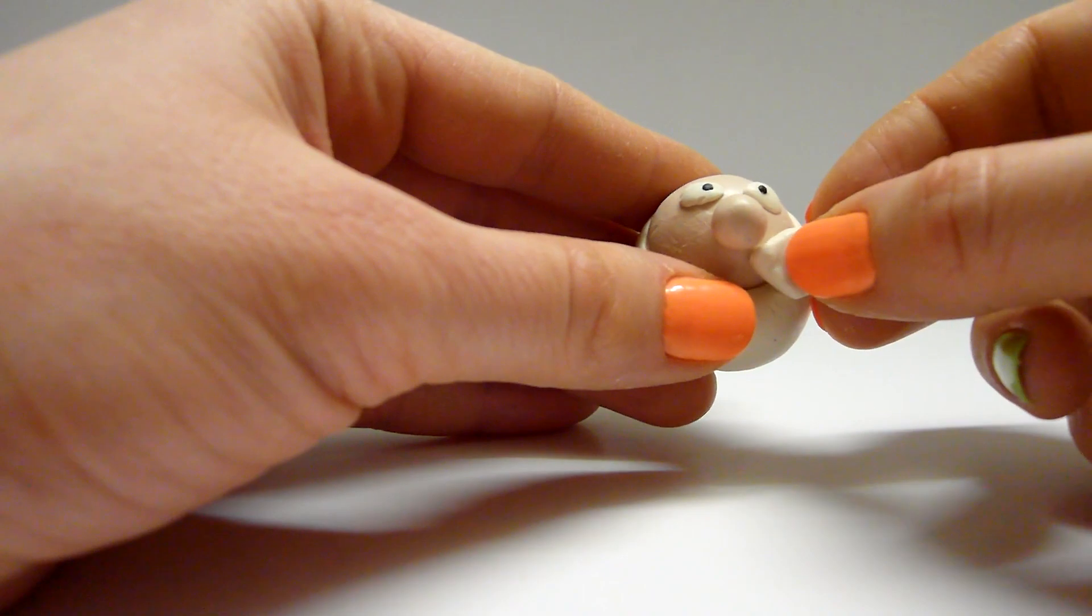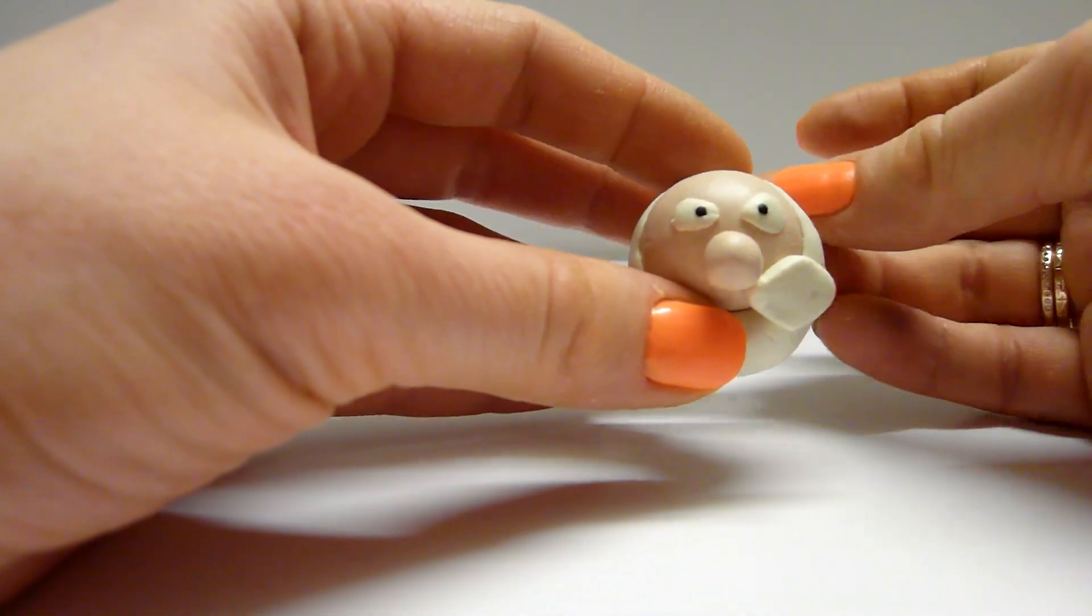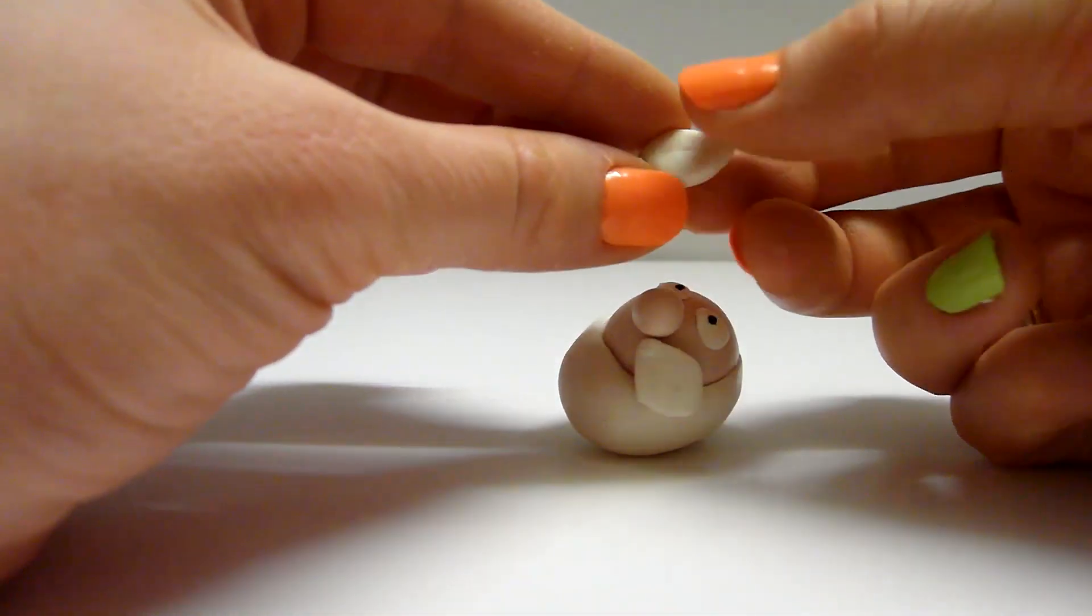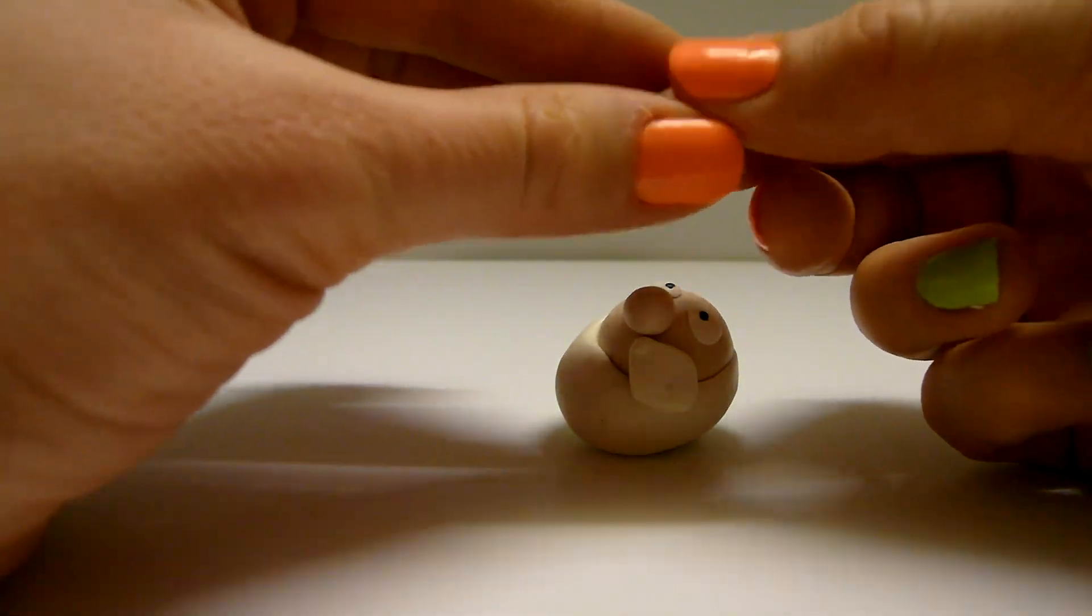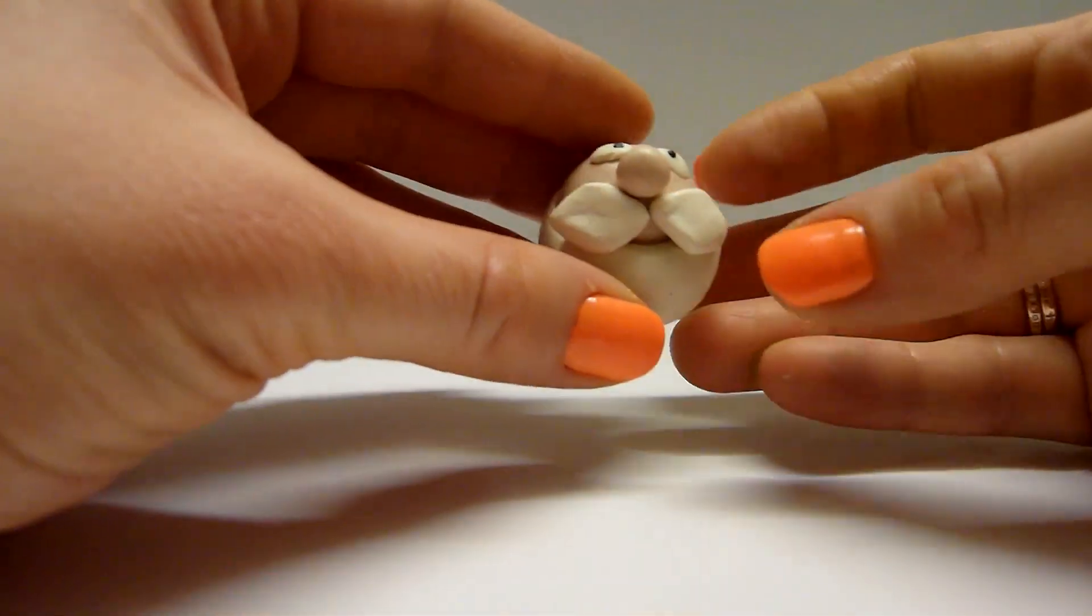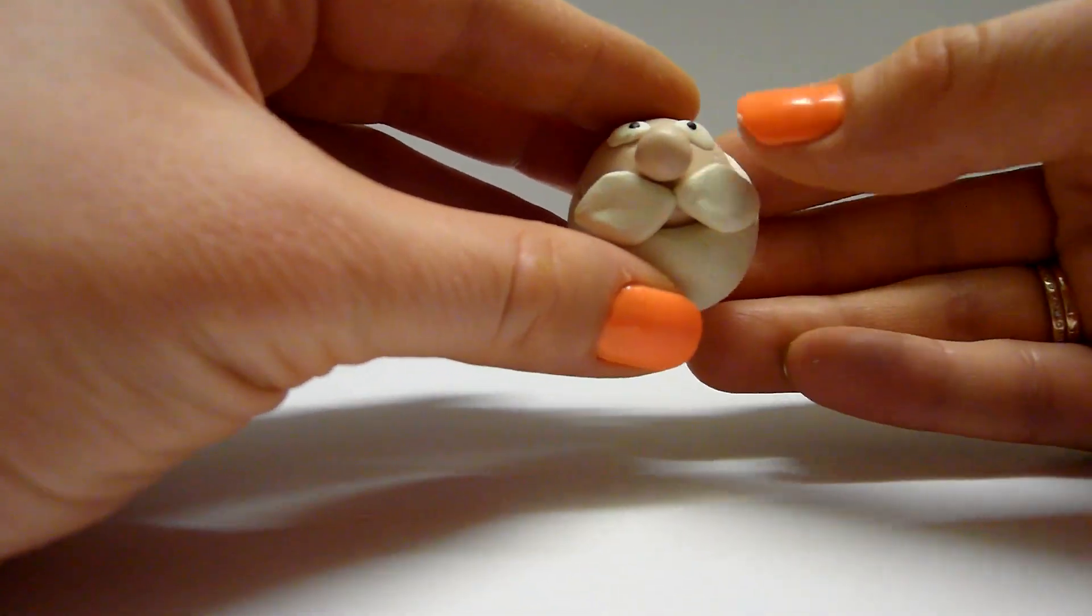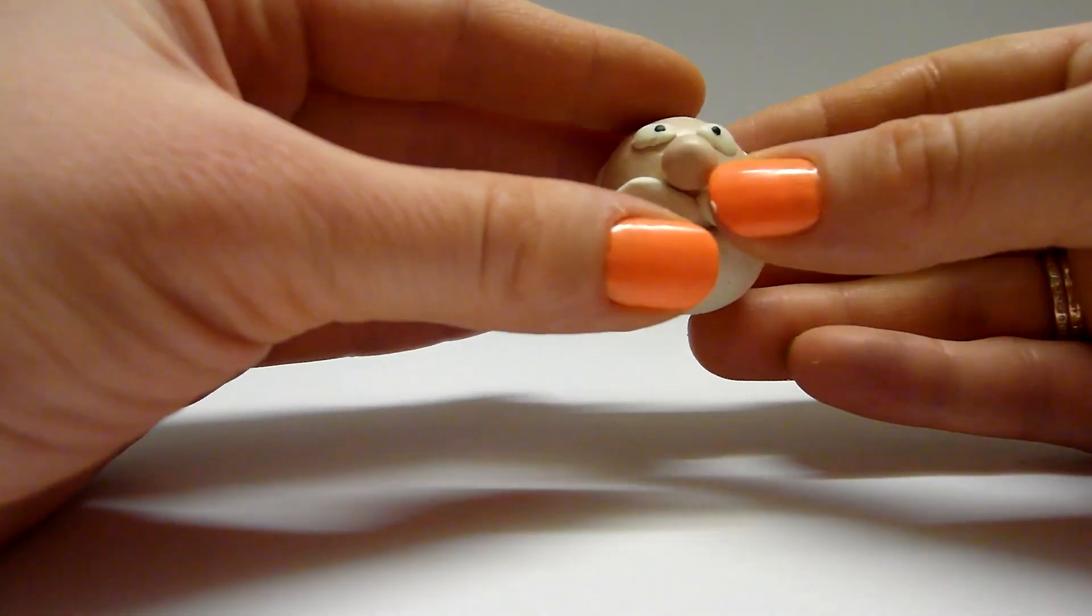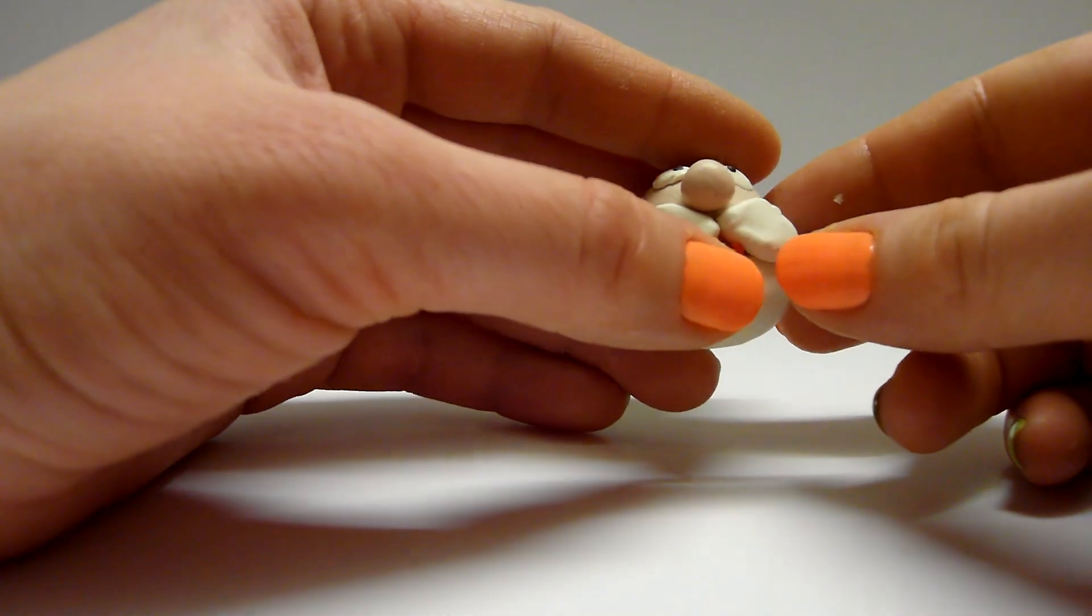Then make moustache of small parts of white clay. Insert a red mouth.